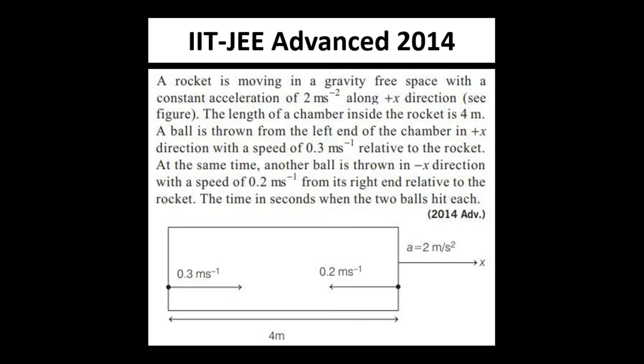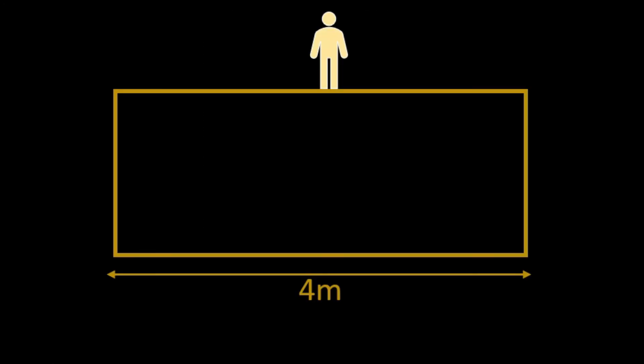A ball is thrown from the left end of the chamber in the positive x-direction with a speed of 0.3 meters per second relative to the rocket. At the same time, another ball is thrown along the negative x-direction toward the first particle with a speed of 0.2 meters per second from its right end relative to the rocket. The time in seconds when the two balls hit each other.